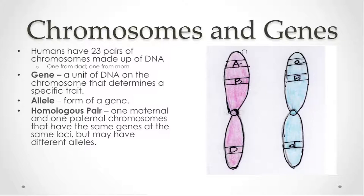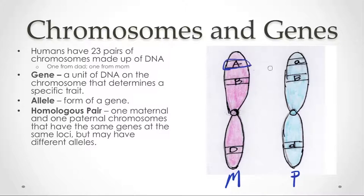Let's say, for example, that this is a pair of chromosome 1. The chromosome on the left may be the maternal copy, the one that was inherited from the mother, and the chromosome on the right is the paternal copy. Together we would call this a homologous pair. I've identified some portions on the chromosomes with letters, and these just represent the locations of certain genes.